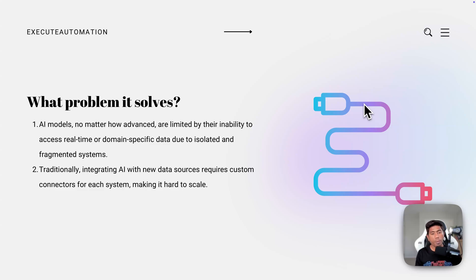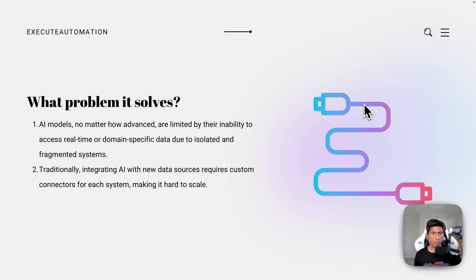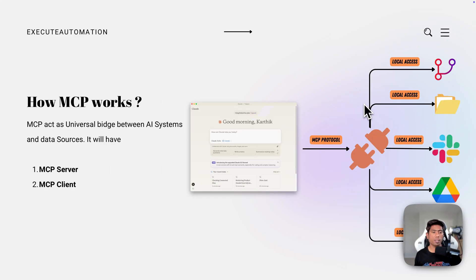So what problems does MCP really solve? AI models, no matter how advanced they are, are limited in their ability to access real-time or domain-specific data due to isolated and fragmented systems. Traditionally, integrating AI with new data sources requires custom connectors for each system, making it quite hard to scale — but not anymore, because of MCP.